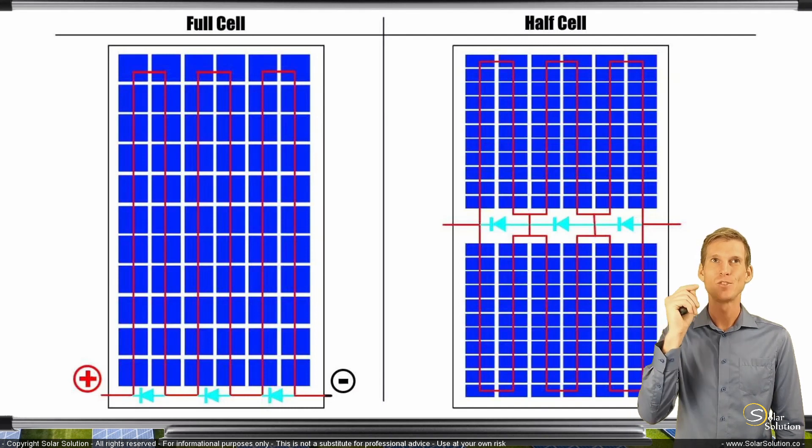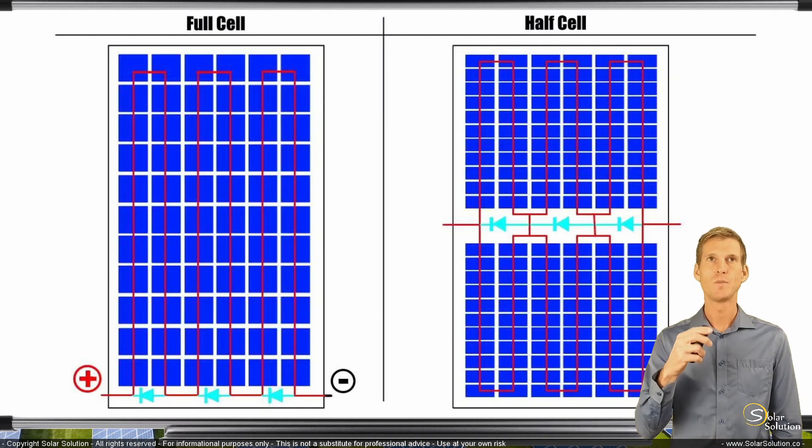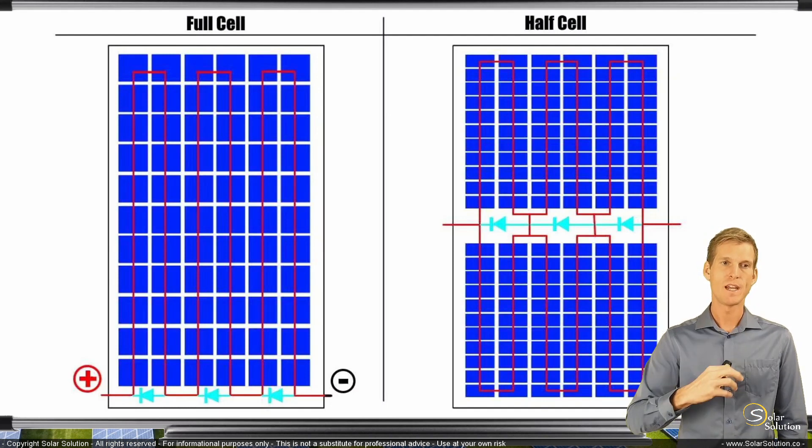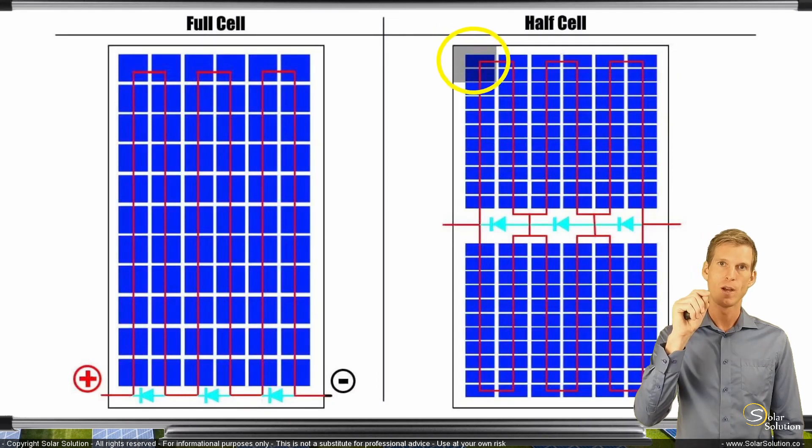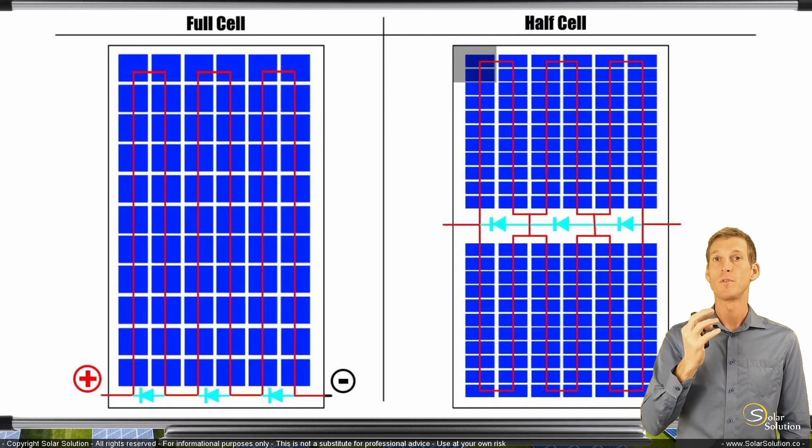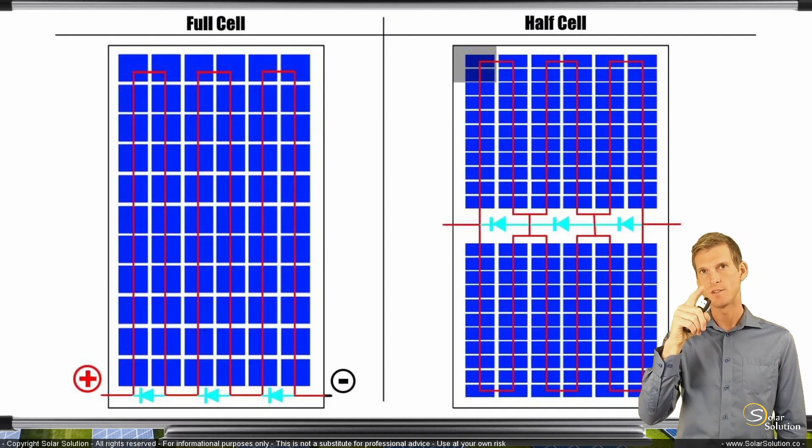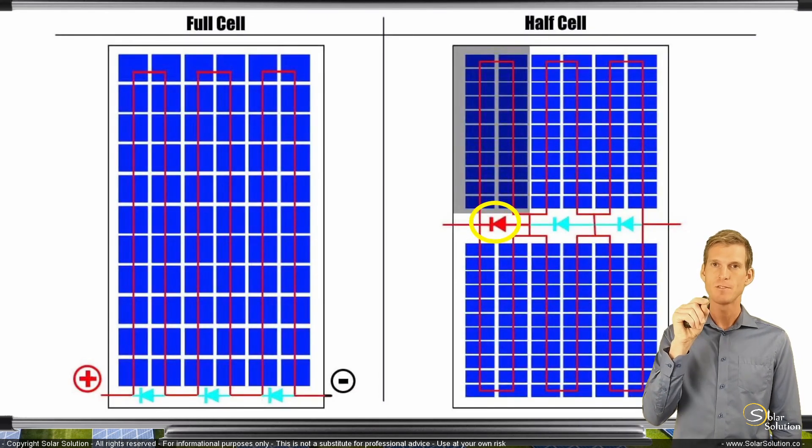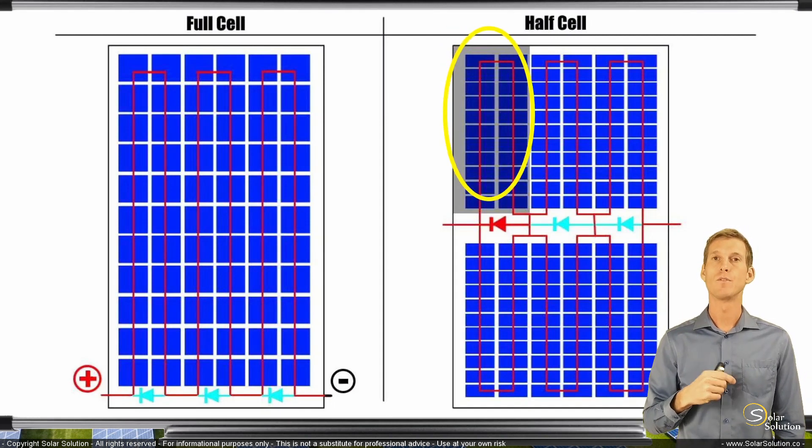And now let's see what happens if we get local shading or some kind of malfunction or underperformance of one of the photovoltaic cells in this module. Let's assume we have a similar situation as we had with the full cell regular photovoltaic module. We're getting some kind of local shading on the panel, all the way at the top left on the module, whereby some of the cells all the way in the top there are not operating anymore. And therefore, you're affecting the whole string. But now the first bypass diode will be activated and will redirect the current. And you can see that as a result, that whole loop on the top left is not functioning anymore, not contributing anymore to the overall power output of the module.